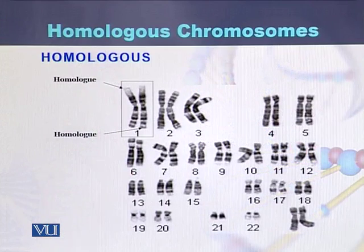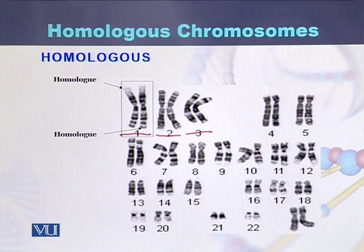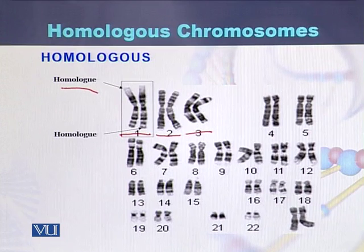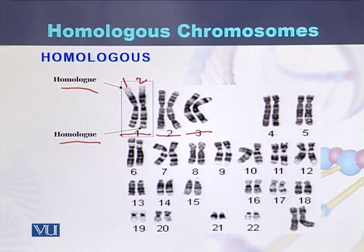In this diagram, we can see the karyogram of human chromosomes, where each chromosome exists as a pair. This is the first pair of chromosomes, the second pair, and the third pair. Chromosomes are arranged in the form of homologs — one chromosome is called homolog one and the other is called homolog two. All chromosomes that are similar in size and shape are called homologous chromosomes.